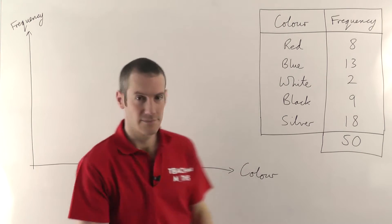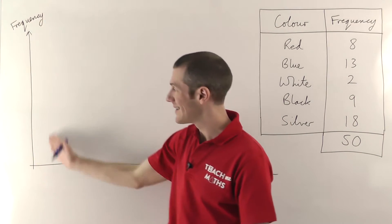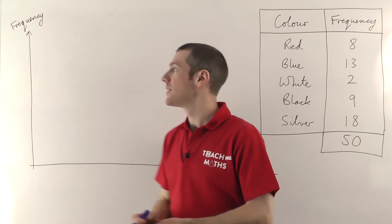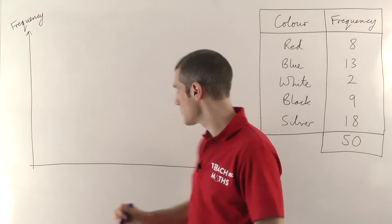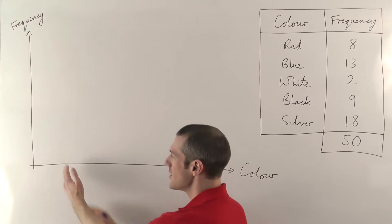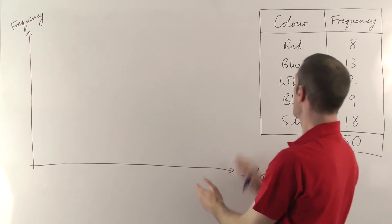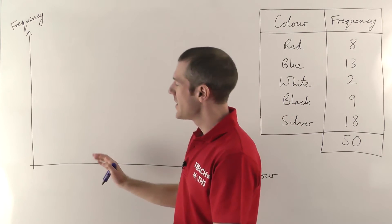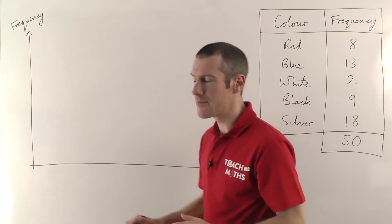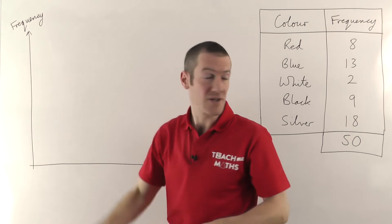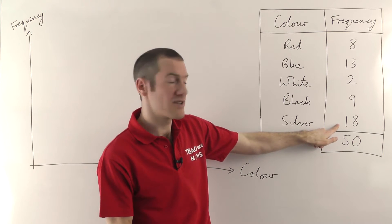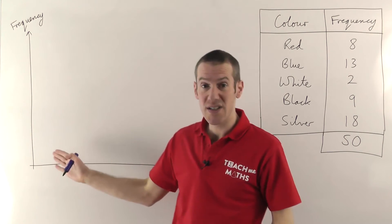Okay, there we go. So I've got color running along the bottom, and up the side here is the frequency. Now the next thing is to put the numbers or labels on the axes. You can have the different bars going along here representing the different colors from the frequency table. The frequencies up the side just need to correspond to the numbers, so you only need to go as high as your biggest frequency. You don't need to go all the way up to 50, because no bar is going to go higher than 18. So in this case, going up to 20 would probably be good.